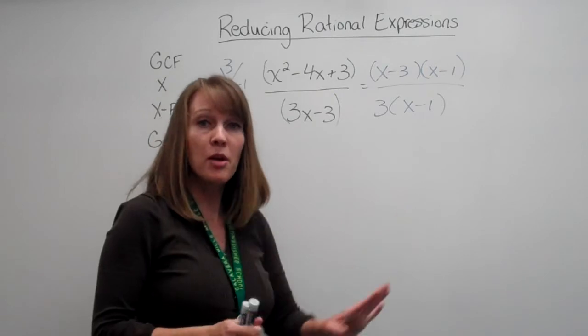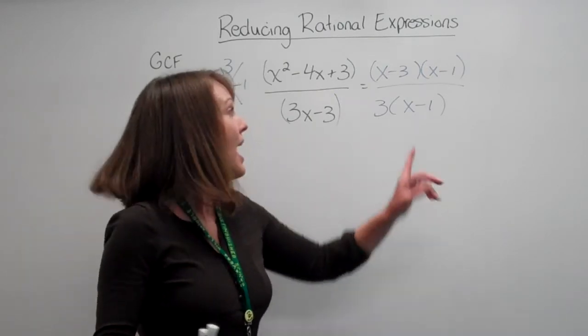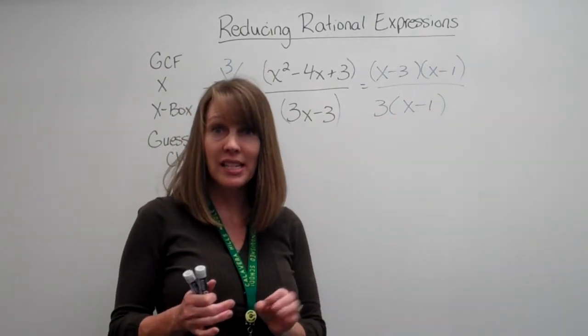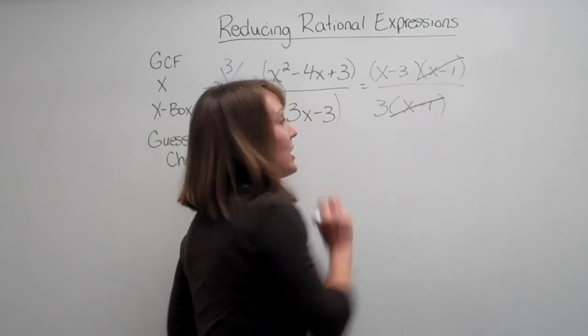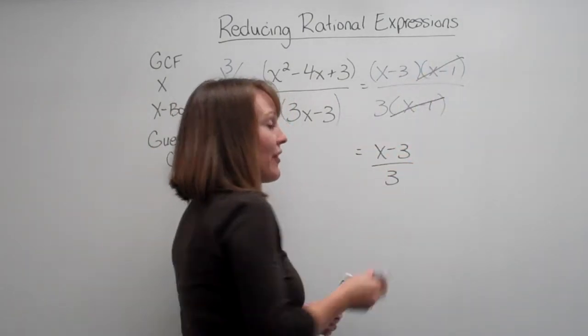Alright. Now we look at the top and the bottom. We're looking for parentheses that we can cross out that are exactly the same. And we have an x minus one and an x minus one. Anything divided by itself is one, so we can cancel this out. And we're left with x minus three divided by three.